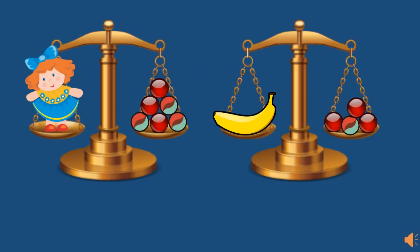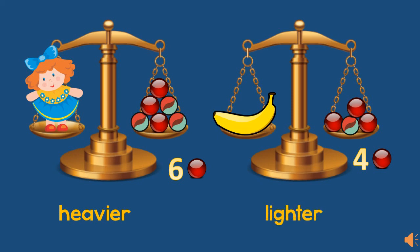Now look at these two objects. What are their weights? The weight of the doll is about six marbles. The weight of the banana is about four marbles. Which one is heavier than the other? The doll must be heavier than the banana. And the banana must be lighter than the doll.